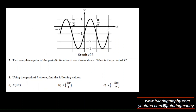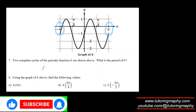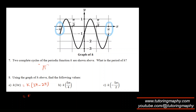For the next graph, two complete cycles are given from negative π to π, which is a span of 2π units. So one complete cycle is π units — the period is π. Using this, k of 3π: subtract 2π to get k of π, and k of π is negative 1.